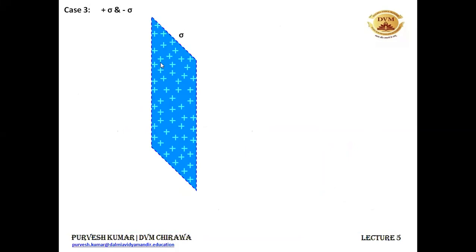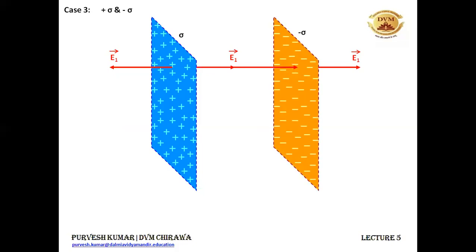From the positively charged sheet, the electric field lines will be coming outward. So this is E1 due to the positively charged sheet. I also have a negatively charged sheet which has surface charge density minus sigma. From this minus sigma sheet, the electric field lines will be coming towards it. We need to find the electric field in regions 1, 2, and 3.